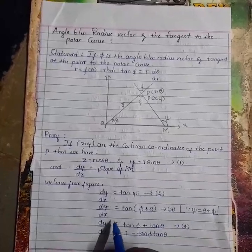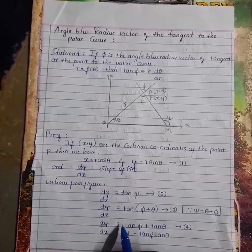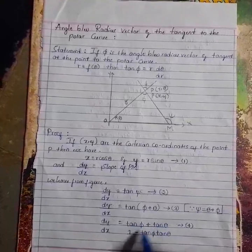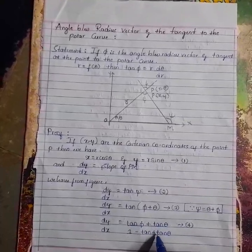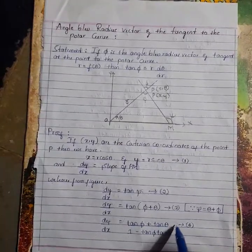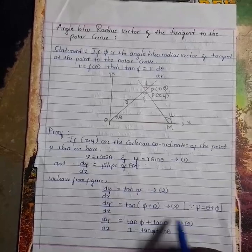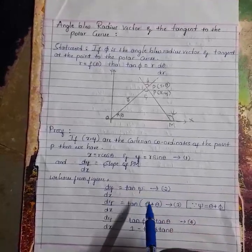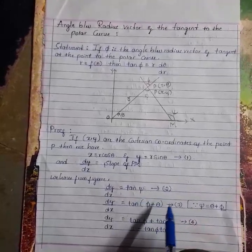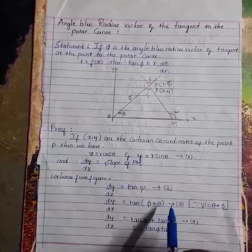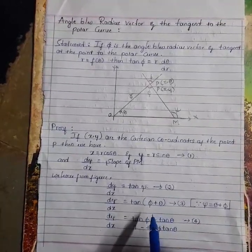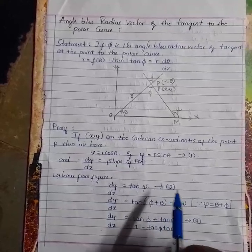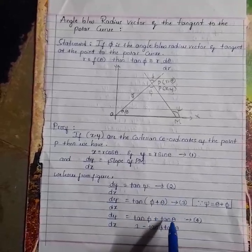Now dy/dx = tan(φ + θ) = (tan φ + tan θ) / (1 − tan φ · tan θ). This is equation number four, derived using the formula tan(A + B) = (tan A + tan B) / (1 − tan A · tan B).